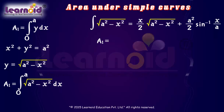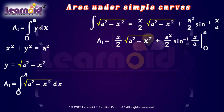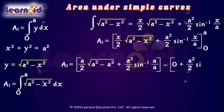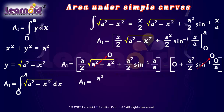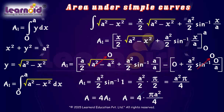So A1 = [(x/2)√(a² − x²) + (a²/2)sin⁻¹(x/a)] from 0 to a. Substituting x = a and x = 0, we get A1 = (a²/2)sin⁻¹(1), which gives A1 = πa²/4. The total area of the circle is four times A1, so the area of the circle equals πa².